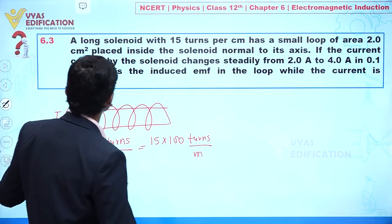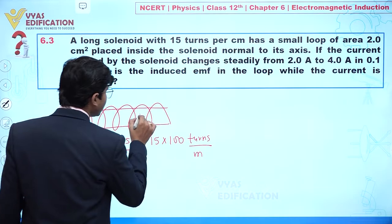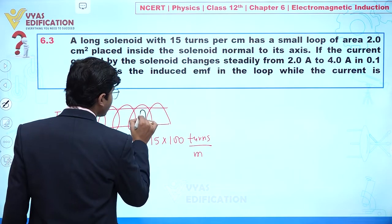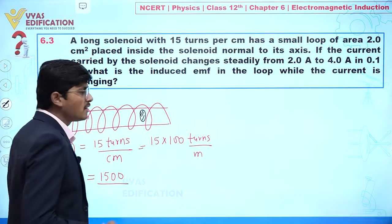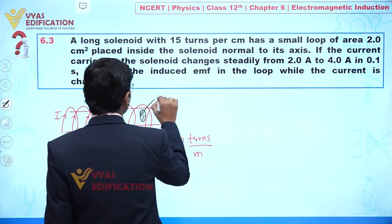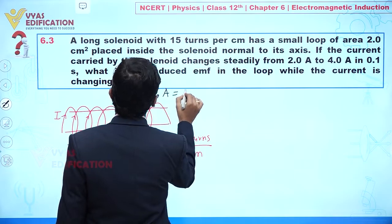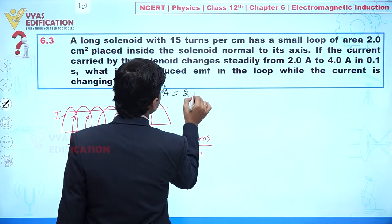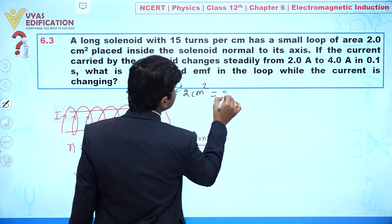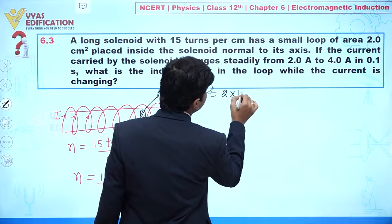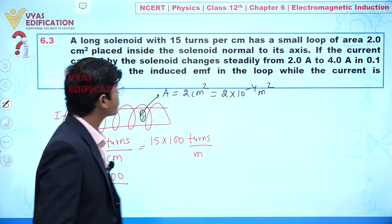A small loop is placed inside the solenoid. The area of this small loop is two centimeters square, which we can write as 2 × 10⁻⁴ meters square.